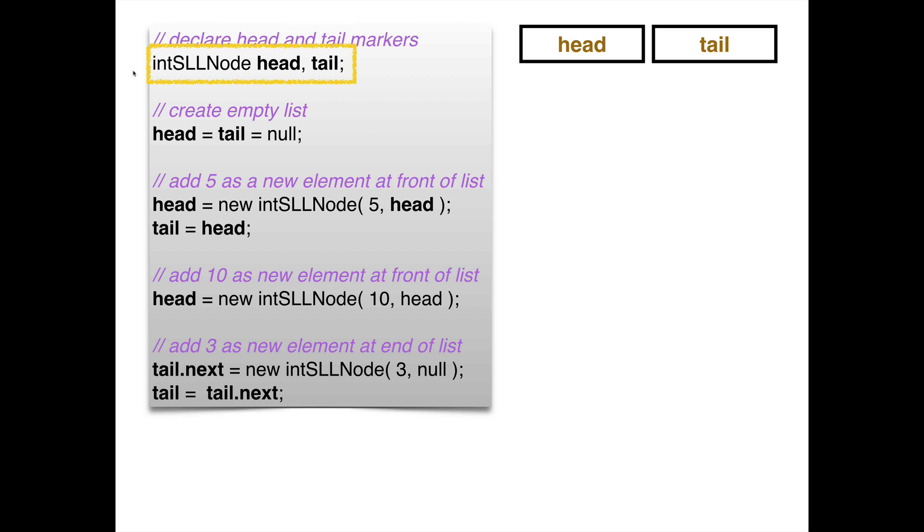Let's take a look at this code. Head and tail are references to elements of this type, intSLLNode, a node from a singly linked list of integers. So head and tail. So that's what I have here. This is what happens. I have two variables and they can be referencing. They're not really contained. They will just contain the address of objects that are of this type.